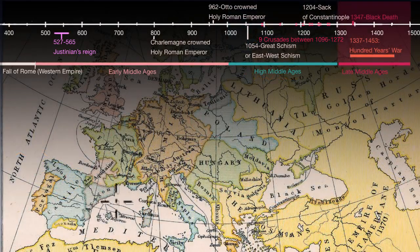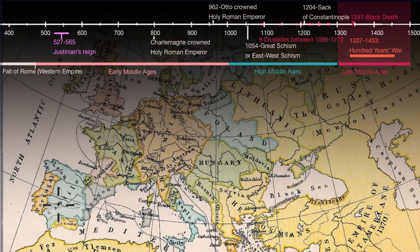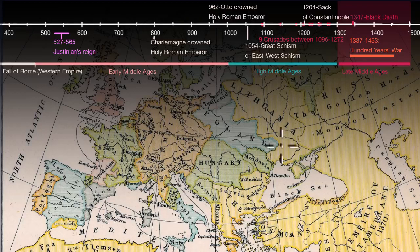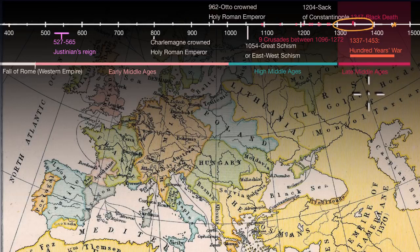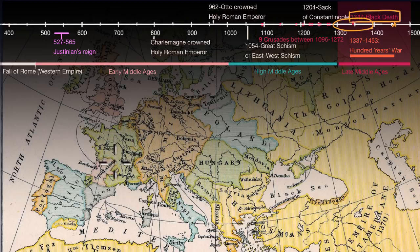By the Late Middle Ages, Europe is starting to resemble the Europe we know in later periods — the Renaissance and Age of Exploration. Much of the Iberian Peninsula has been reclaimed from Muslim rule, although Muslim rule remained in Granada. Most of the Byzantine Empire has now been taken over by the Ottomans, save Constantinople, which eventually falls in 1453, formally ending the Byzantine Empire. The Late Middle Ages is most known for being not that pleasant: in 1347 the Black Death killed roughly 50 million people in Europe, approximately 60% of the population.